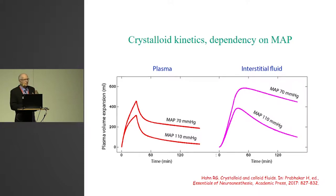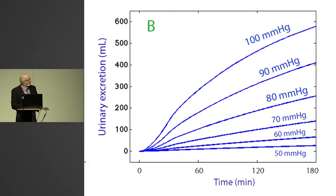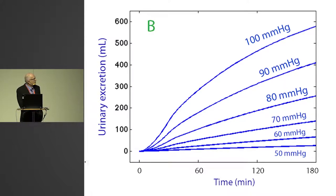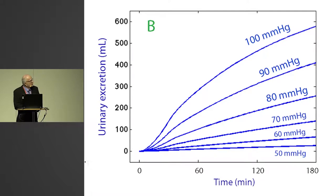Here is a prediction of urinary excretion if you infuse one liter of Ringer's acetate over 30 minutes, showing what would happen with diuresis depending on the mean arterial pressure.